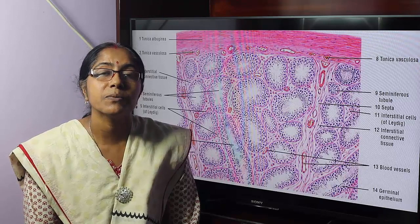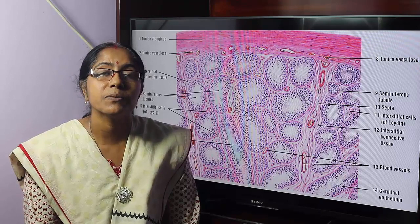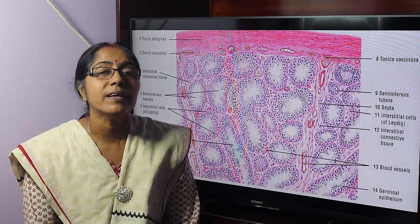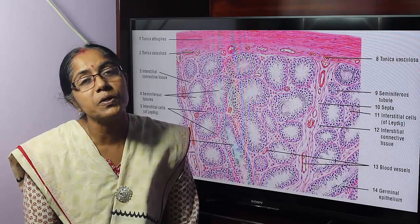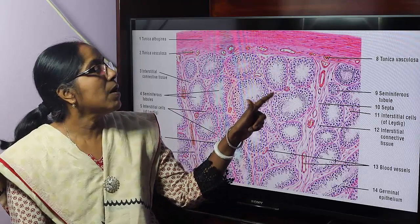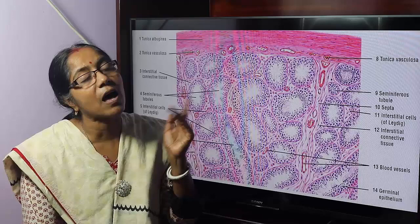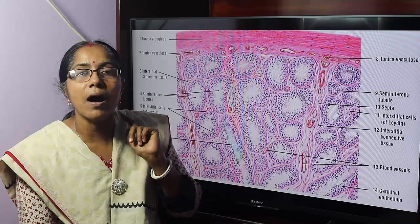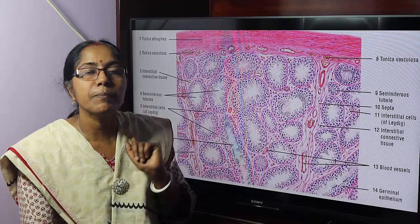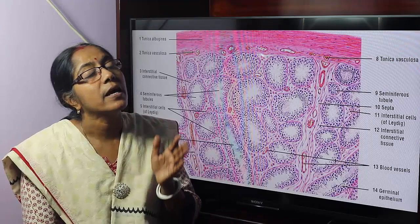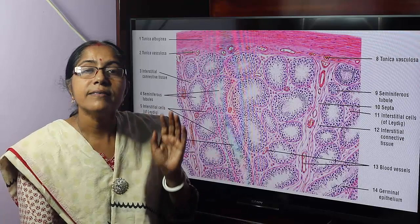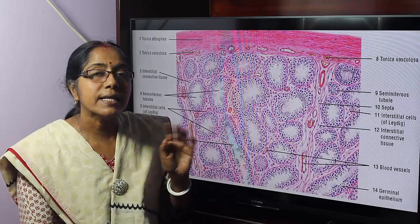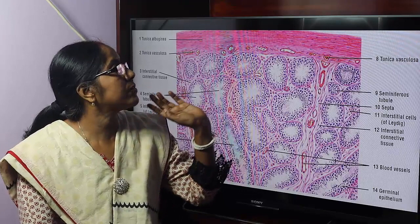We can identify that the tissue section is a slide of the testes. The identifying points are: the section shows a number of seminiferous tubules of different sizes and shapes which contain spermatozoa of various stages of maturation. The section is covered by a capsule. The seminiferous tubules are lined by stratified epithelium, termed as germinal epithelium. The tubules are separated from each other by interstitial connective tissue which contains numerous blood vessels, connective tissue cells, and interstitial cells of Leydig.